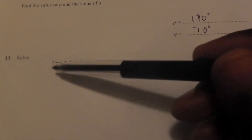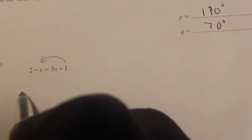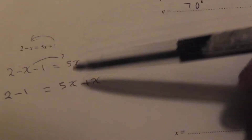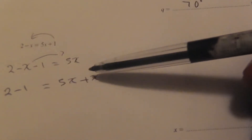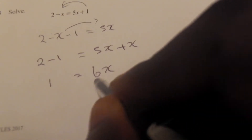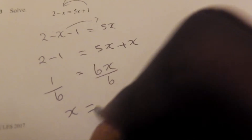Solve the equation. Move all terms so that x is isolated. Moving the 1 to the other side (positive becomes negative): 2 − x − 1 = 5x. Then move x to the other side: 2 − 1 = 5x + x, giving 1 = 6x. Divide both sides by 6: x = 1/6.